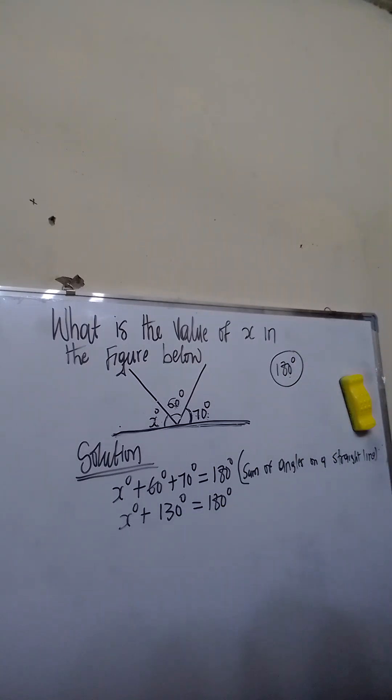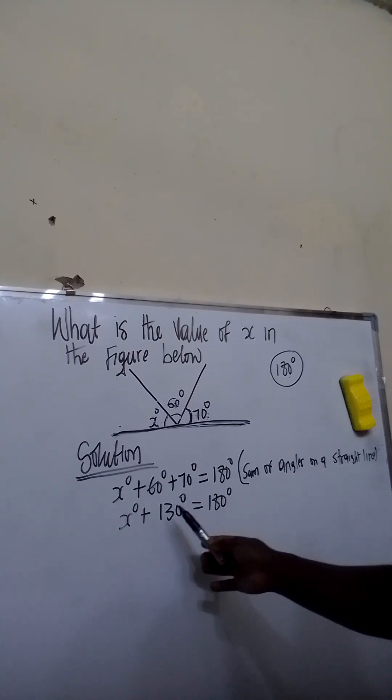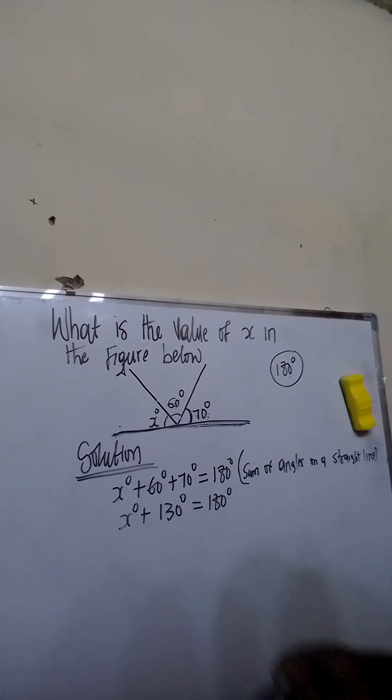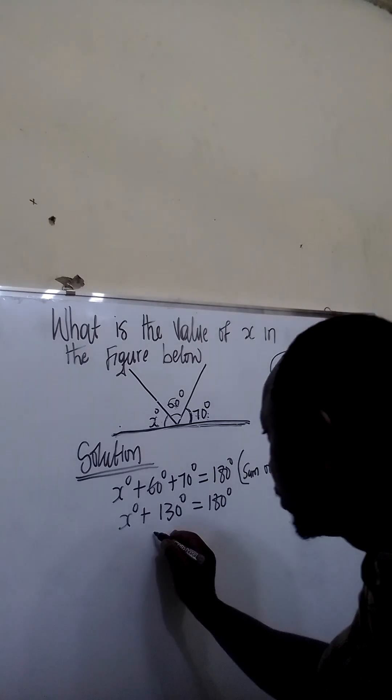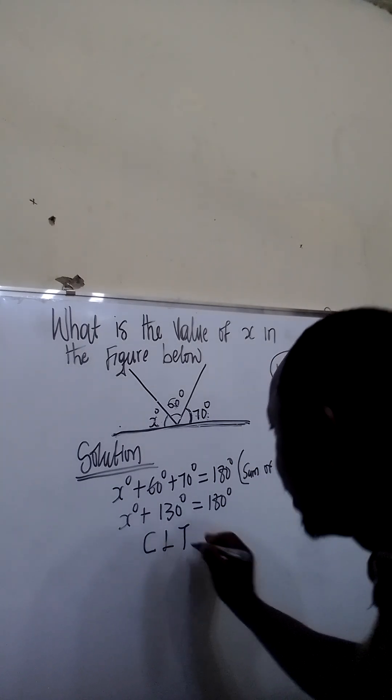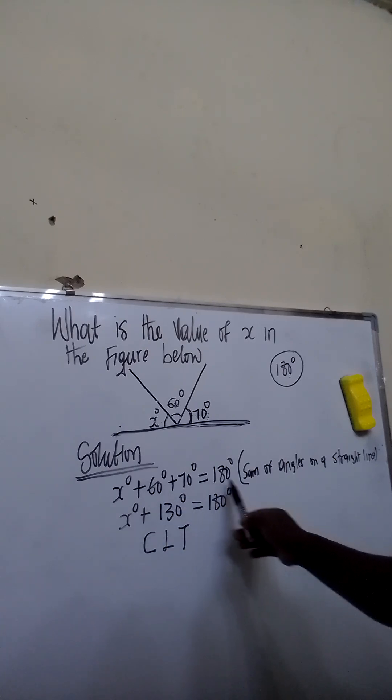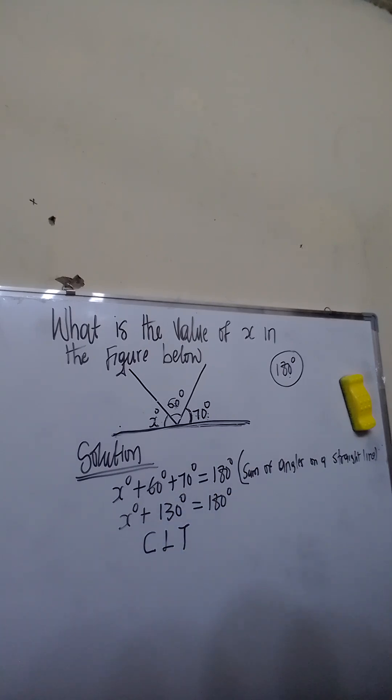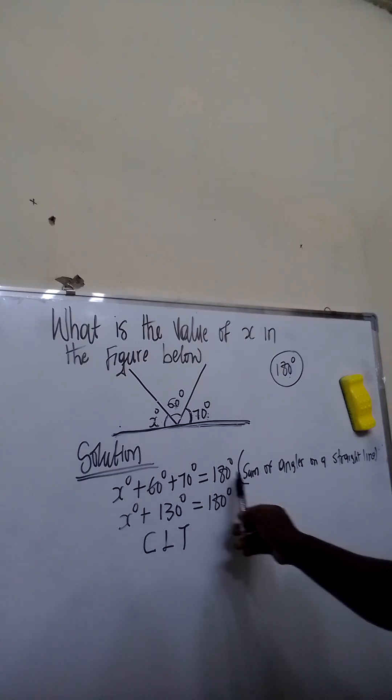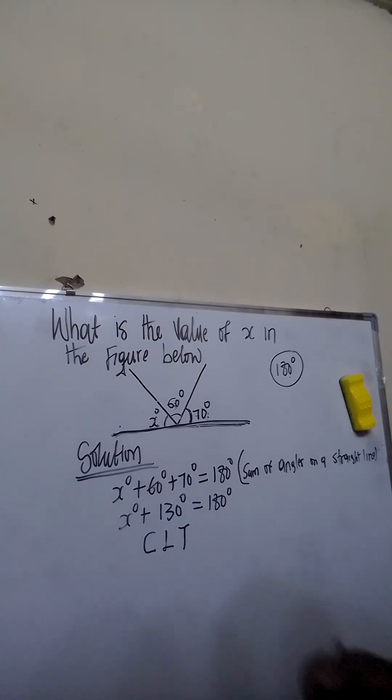The next thing to do is to collect like terms. This implies plus 130 degrees will move to the other side of the equation. When plus 130 moves to this point, it will become minus 130.